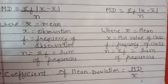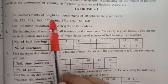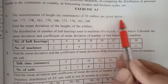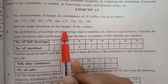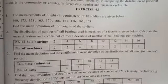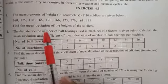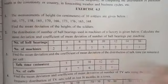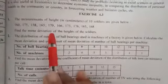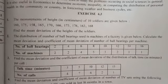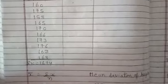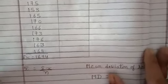Now we will start with Exercise 4.3, Question 1. The measurements of height in centimetres of 10 soldiers are given. Find the mean deviation of the height of the soldiers. Since it is raw data, we will directly find the deviation. Height in centimetres is given. I will find sigma x — the total of all observations — which gives 1674.